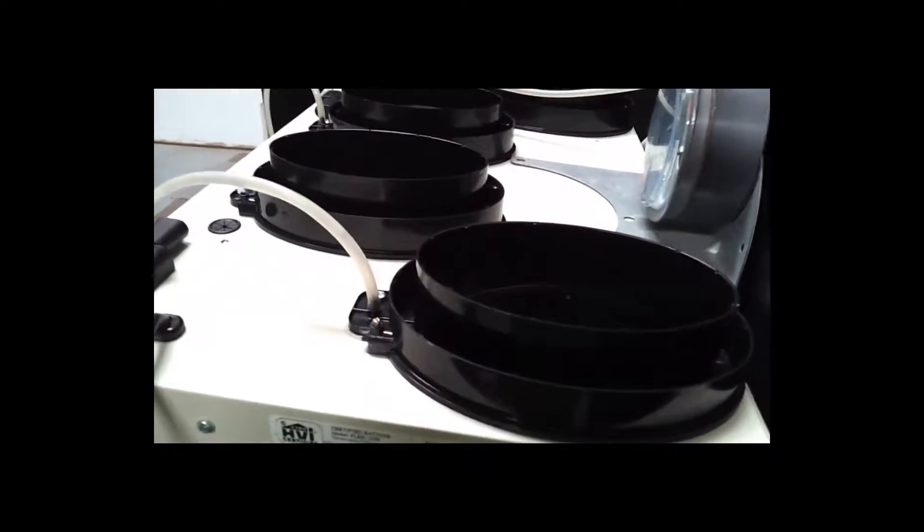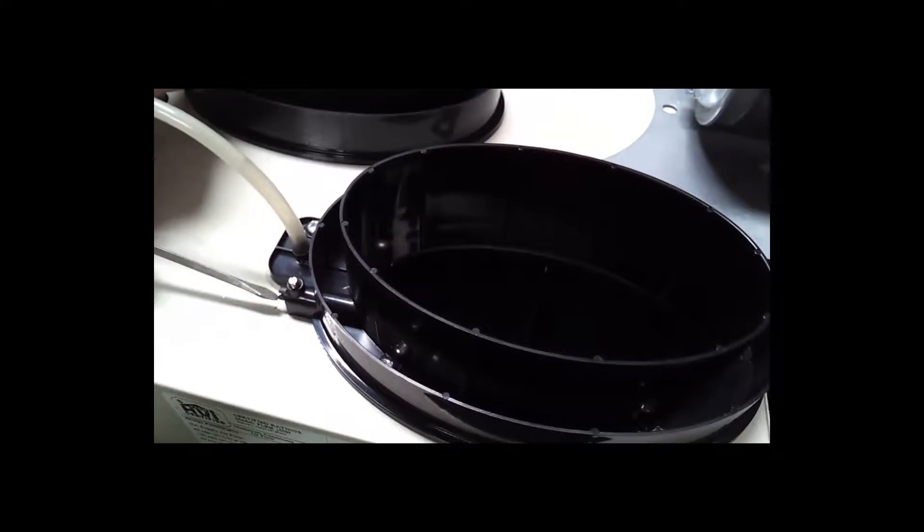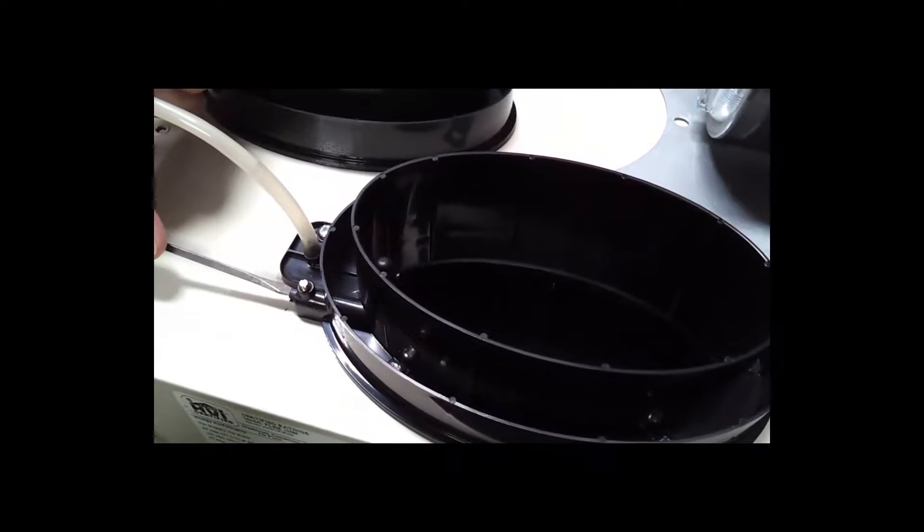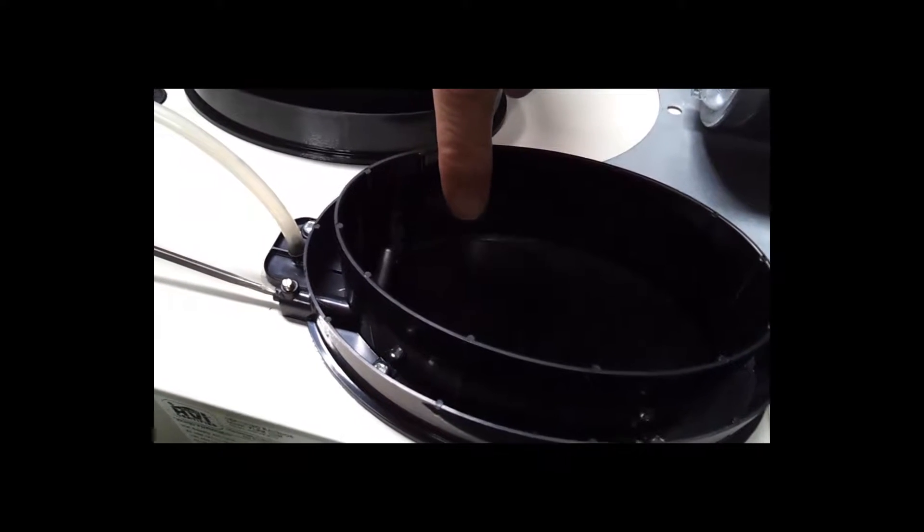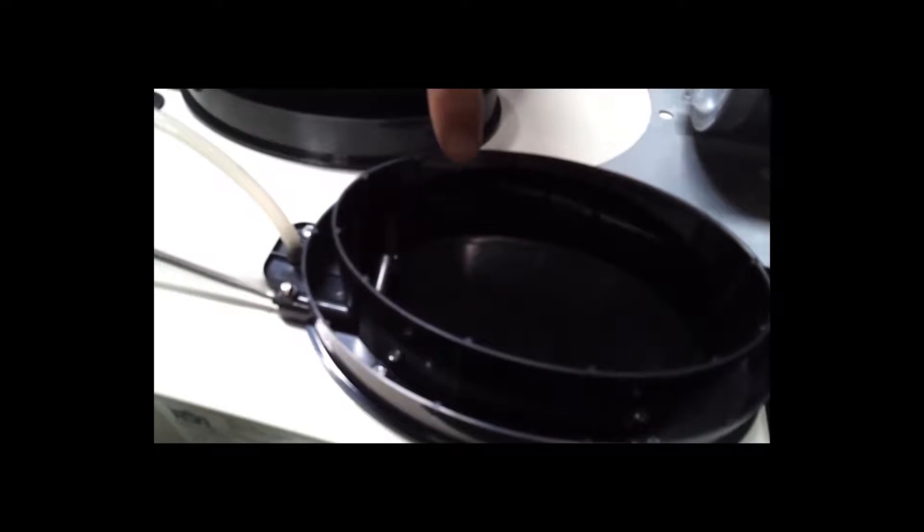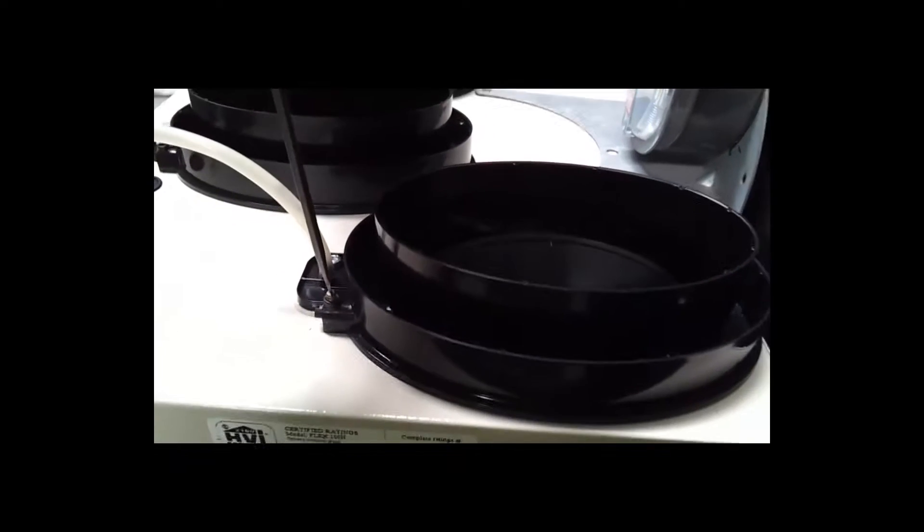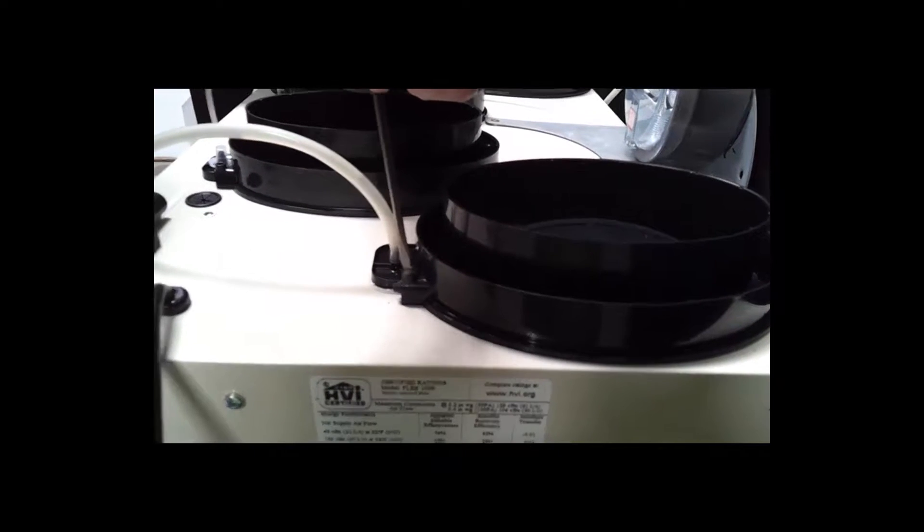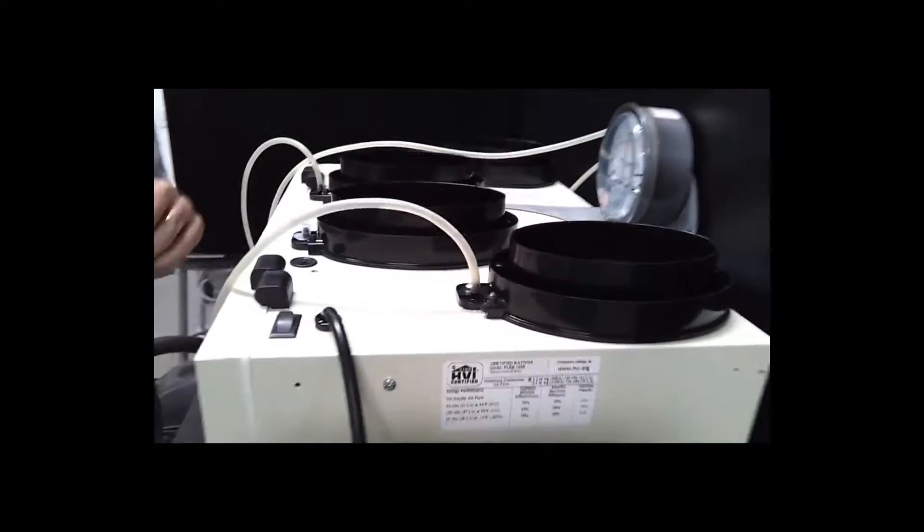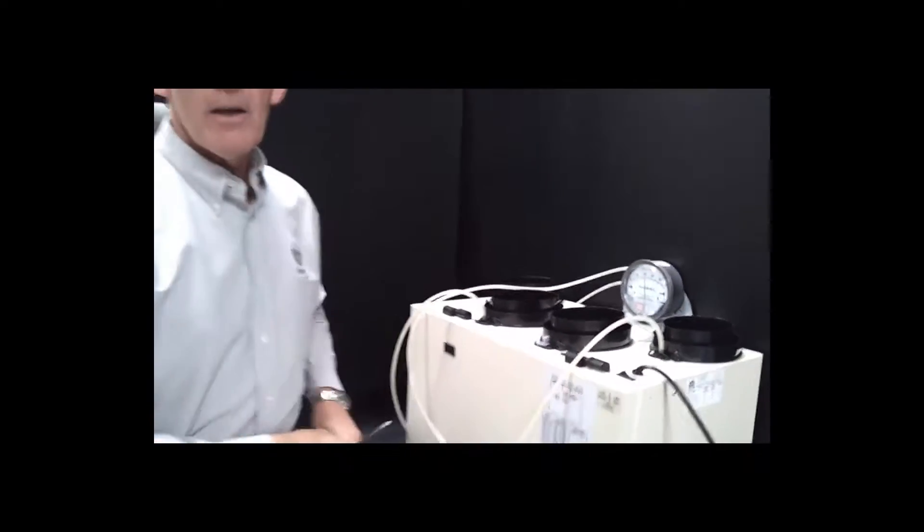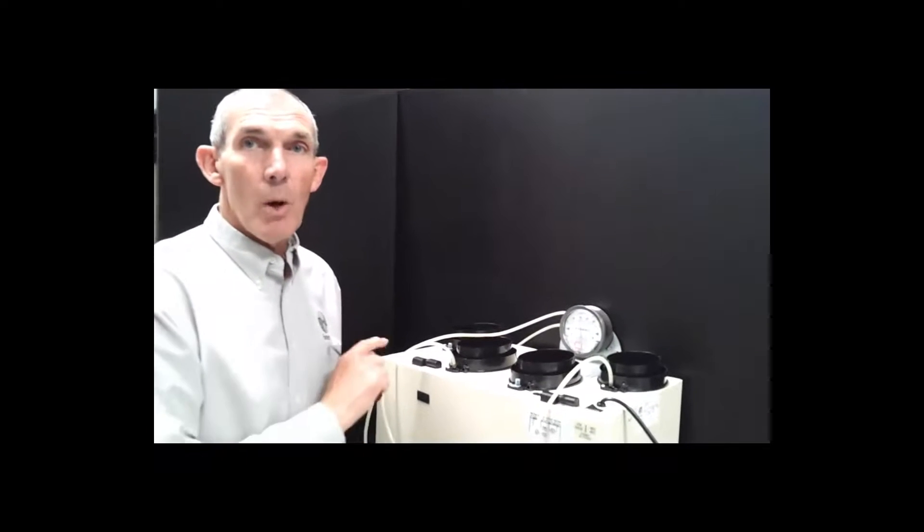Very simply, on the unit, the screw slot here adjusts an arm inside that changes the angle of the damper. You then lock it off when you have it where you want it. Finished. Don't forget to do both sides.